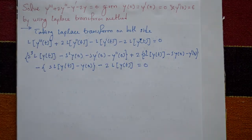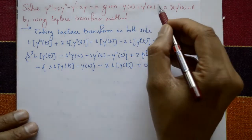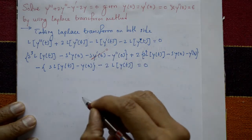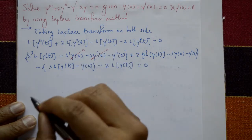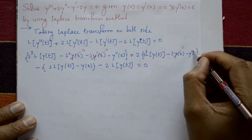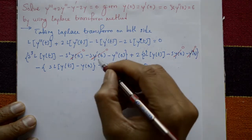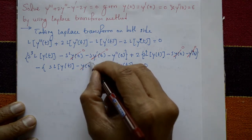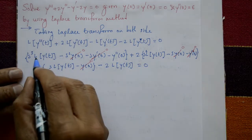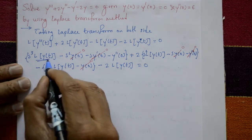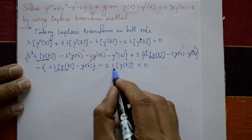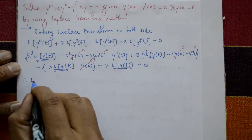Now applying the initial conditions: y(0) = 0 and y'(0) = 0, so those terms vanish. Taking L{y(t)} common from all remaining terms, we get a simplified expression.